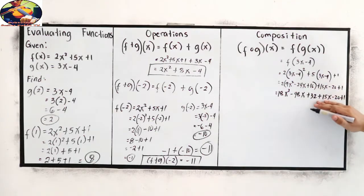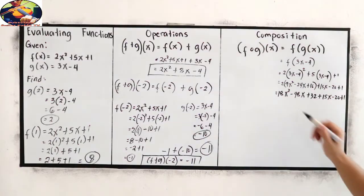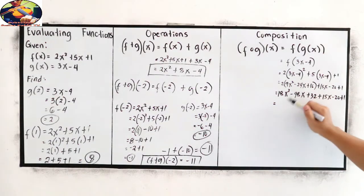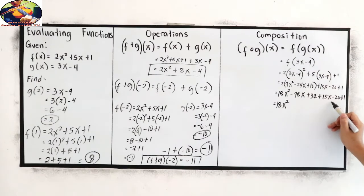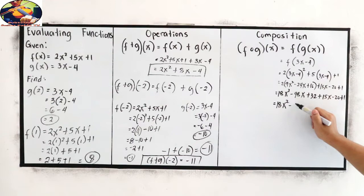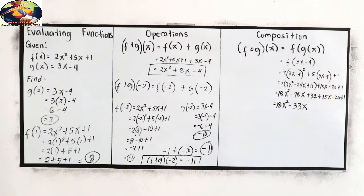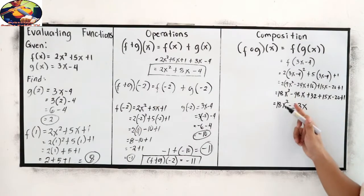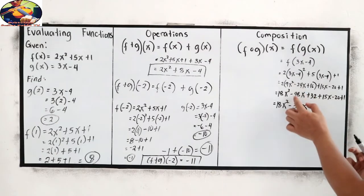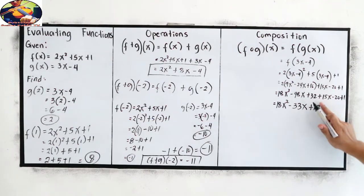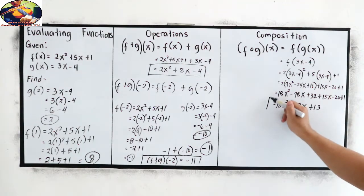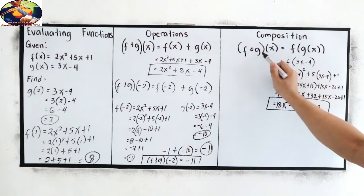Combine like terms: 18x² stays. Then −48x + 15x = −33x. And 32 − 20 + 1 = 13. So f(g(x)) = 18x² − 33x + 13. That is the value of f composed of g of x.